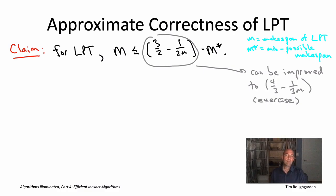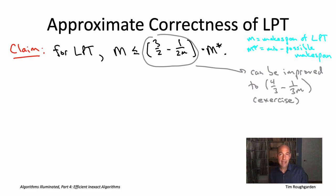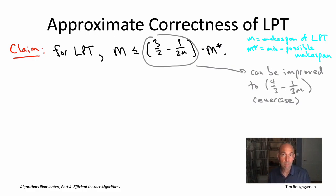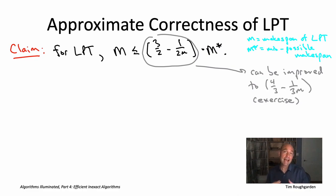Just like with Graham's algorithm, view this as an insurance policy about the doomsday scenario of the most contrived inputs. If you run LPT on realistic inputs empirically, it usually over-delivers and outputs schedules much closer to the minimum possible. If you need to solve the minimum makespan problem in your own applications, LPT is probably the perfect place to start — maybe add bells and whistles if needed, but LPT already does very well for the basic makespan minimization problem.